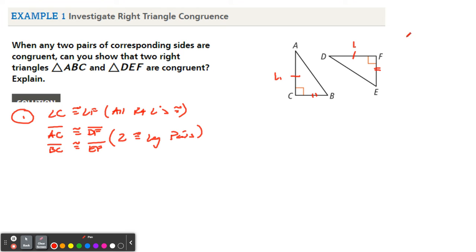So leg one, leg two. Well, if you look here, this is just side, angle, side. Side, angle, side. Yes, these two triangles would be congruent, but it's nothing special. They're just congruent by an old friend, side, angle, side congruence. So if the two legs are congruent, then yes, the right triangles are congruent.